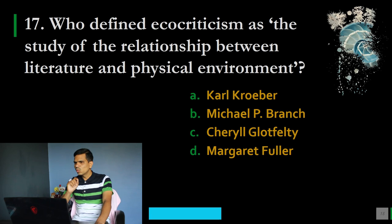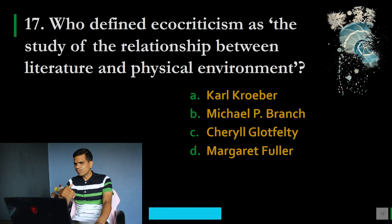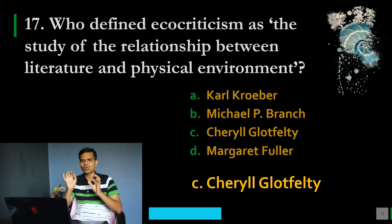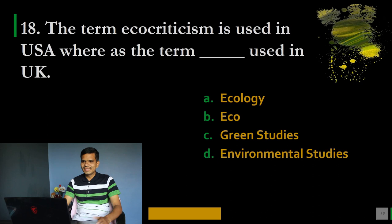Question number 17: Who defined ecocriticism as the study of the relationship between literature and physical environment? Options: A. Karl Kroeber, B. Michael P. Branch, C. Cheryl Glotfelty, D. Margaret Fuller. Ecocriticism is essentially the relationship between literature and nature or environment. The correct option is C, Cheryl Glotfelty, who is the founder of ecocriticism in America and defined the relationship between literature and environment.